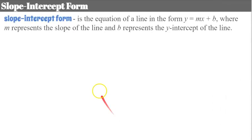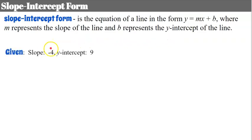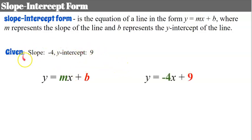Slope-intercept form is the equation of a line in the form y equals mx plus b, where m represents the slope of the line and b represents the y-intercept of the line. So given a slope of negative 4 and a y-intercept of 9, we are going to replace m with our slope, negative 4, and b with our y-intercept, 9. So the equation of this line is y equals negative 4x plus 9.